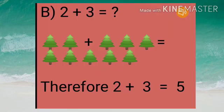Here I have one more example for you. 2 plus 3. First we will take 2 trees, then 3 more trees we will add. So we will get total 5 trees. Therefore, 2 plus 3 is equal to 5.